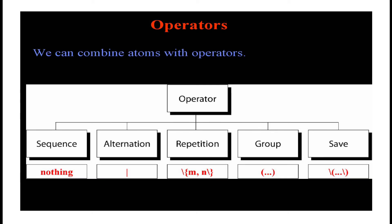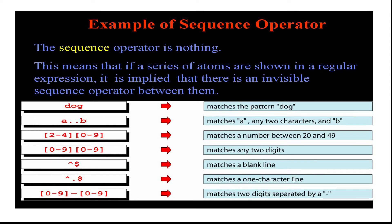The next concept we are going to discuss is operators. We can combine atoms with operators. The different combinations of operators we have are: sequence, alternation, repetition, group, and save. Below you have the syntax for how we are going to write each. For sequence it will be nothing, alternation uses a pipe symbol, repetition uses flower brackets, group uses a dot, and save uses round brackets with the expression.